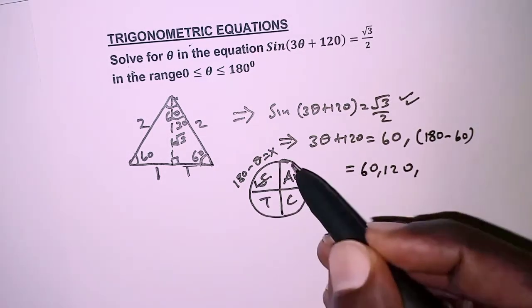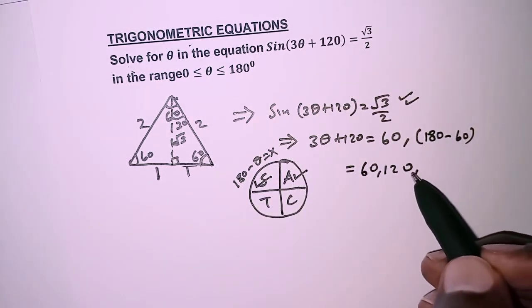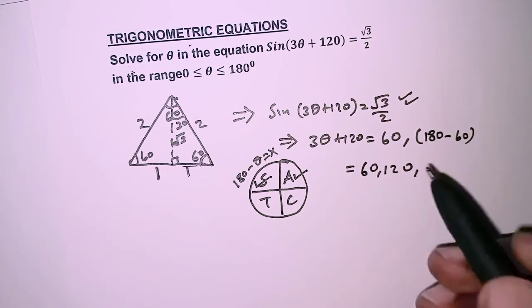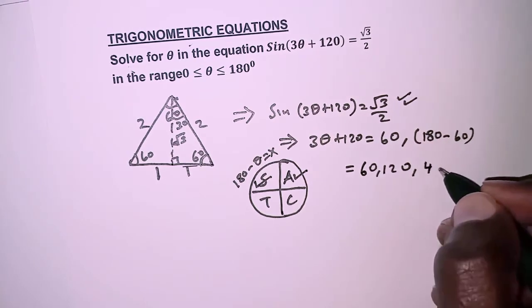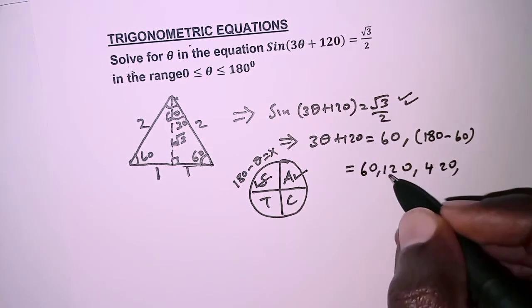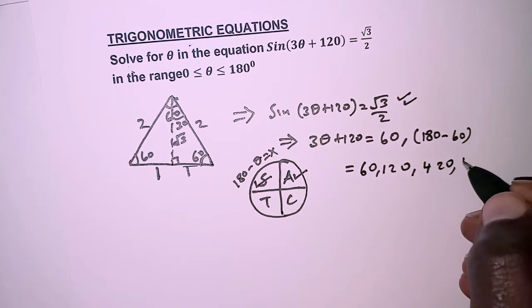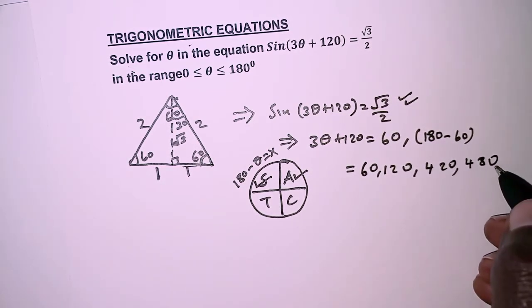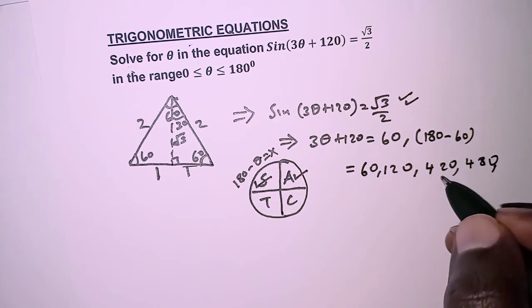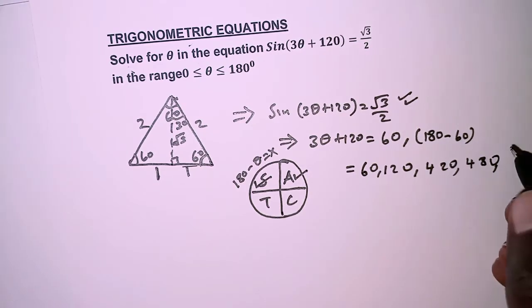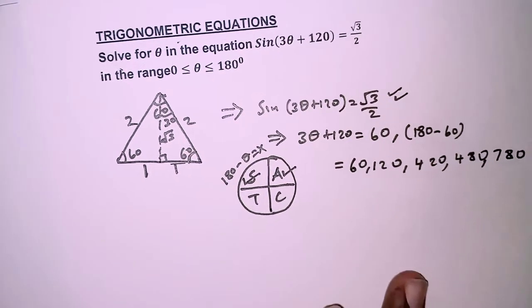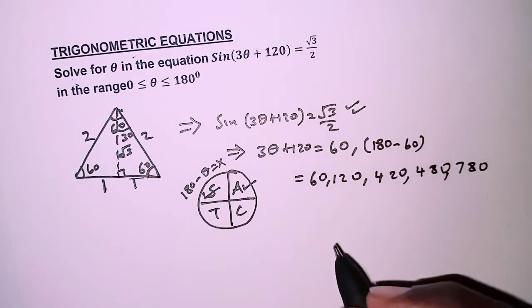This is for one revolution, so for the second revolution we keep on adding 360° to these values. 360° + 60° = 420°, again 360° + 120° = 480°. Next we can also add 360° to 420° and that should be 780°.